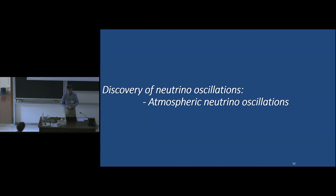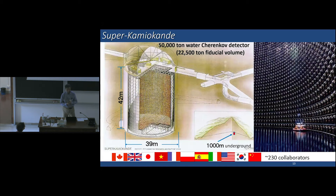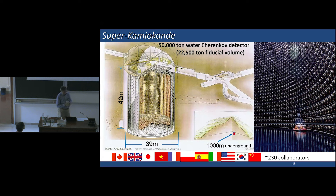Now I'd like to move on to the discovery of neutrino oscillations, beginning with atmospheric neutrino oscillations. Super-Kamiokande is a 50-kiloton water Cherenkov detector, and at present it is a large international collaboration with about 230 collaborators from 11 countries.